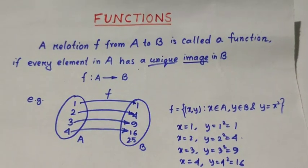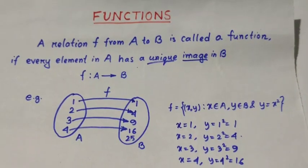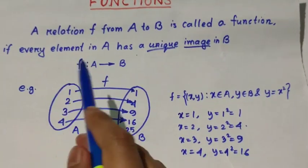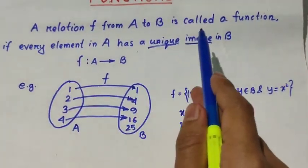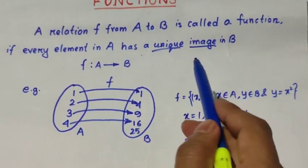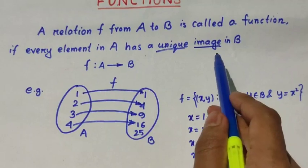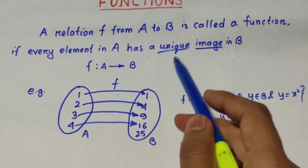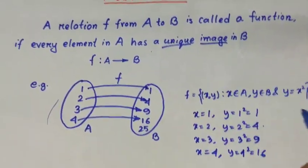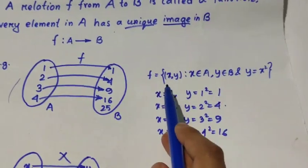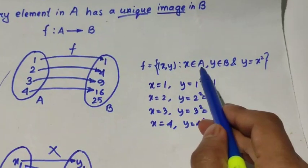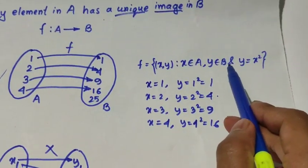Hello friends, I am Niloy and today we will discuss about the function. Now, what is a function? A relation f from A to B is called a function if every element in A has a unique image in B. To understand what a unique image is, we will take this problem. Here, f is defined as a set of (x, y) where x belongs to A and y belongs to B.